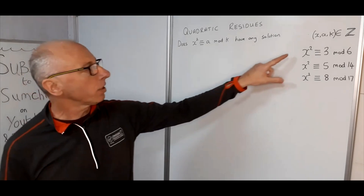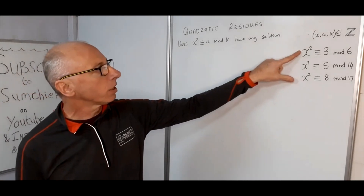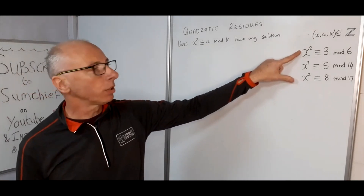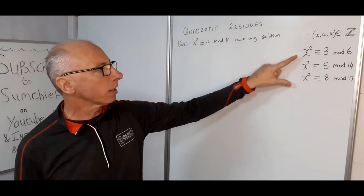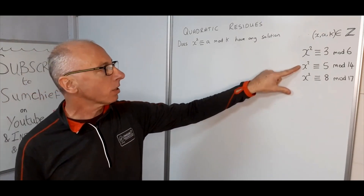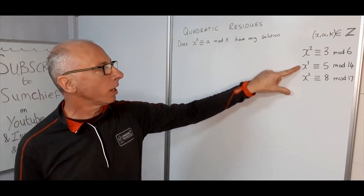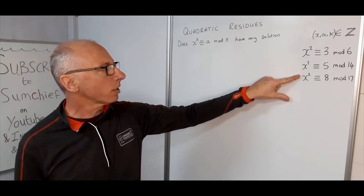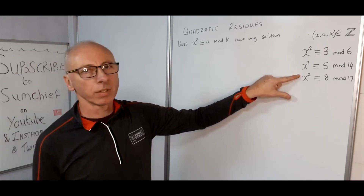We're going to ask these three questions: x² ≡ 3 (mod 6), x² ≡ 5 (mod 14), and x² ≡ 8 (mod 17).